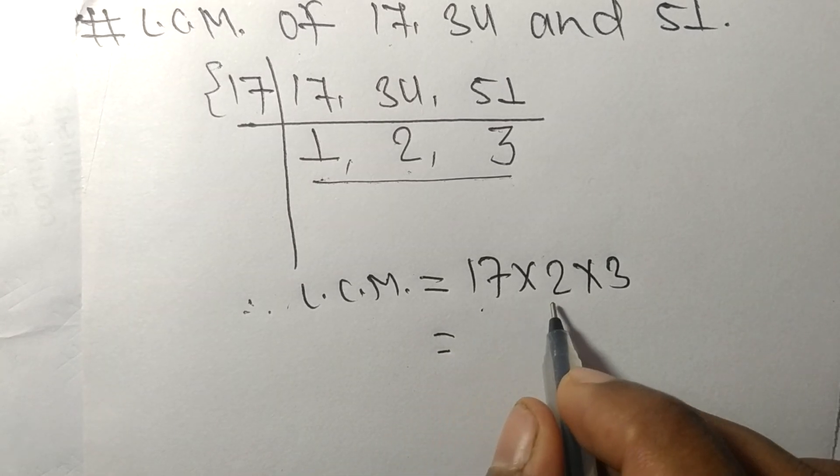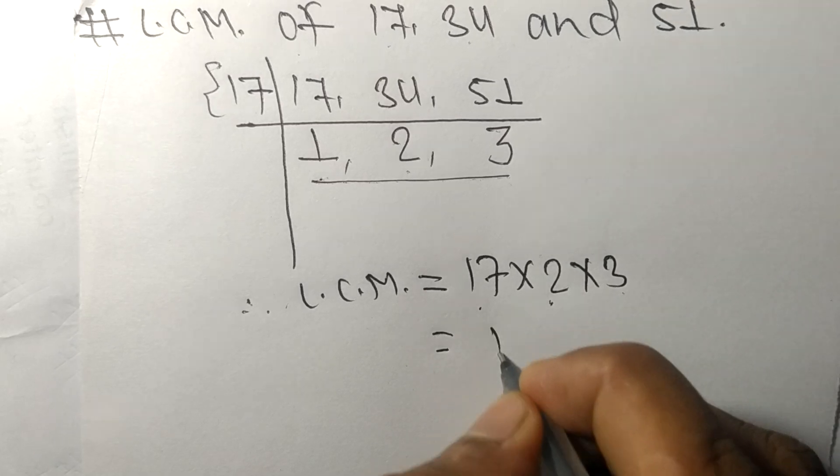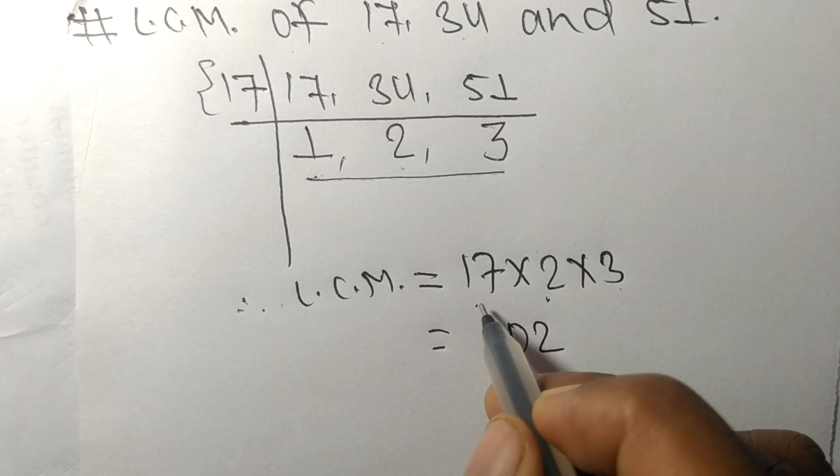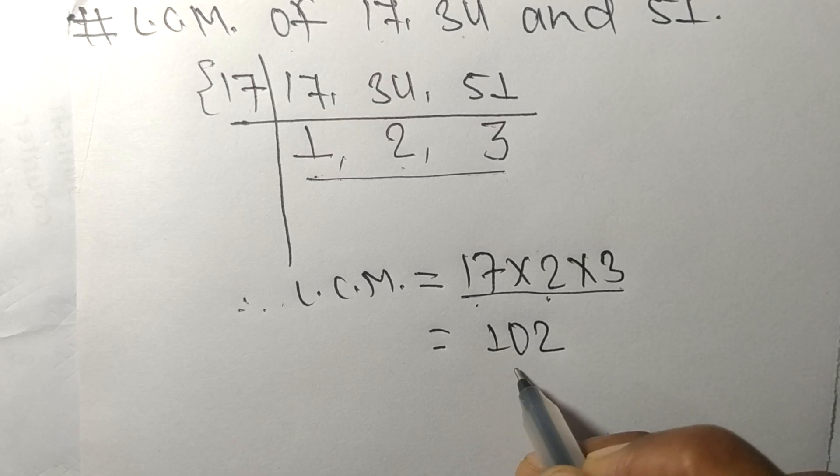So 17 times 2 means 34, 34 times 3 means 102. So by multiplying all these numbers we got 102.